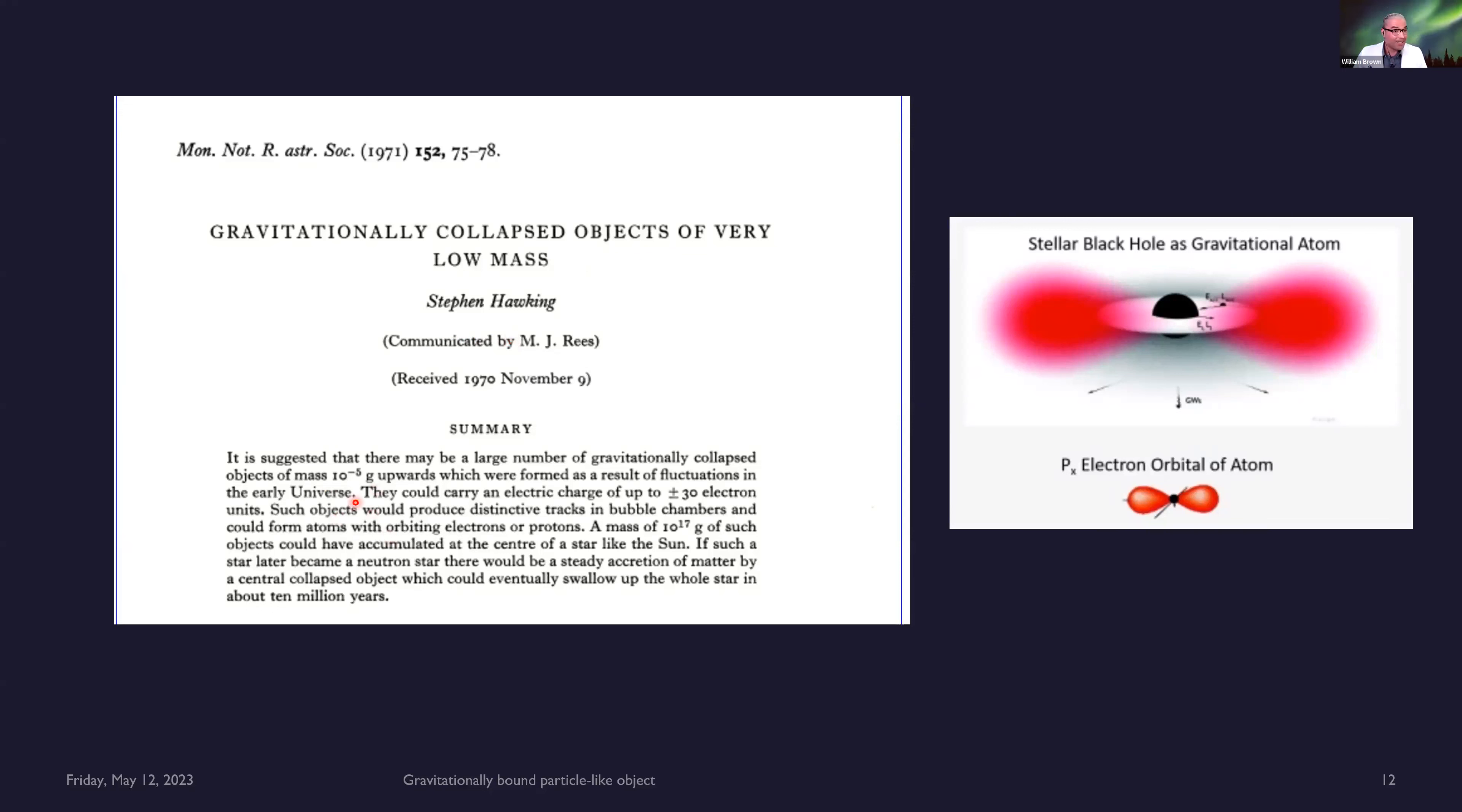He's talking about gravitationally collapsed objects, black holes, of a mass of the Planck mass to negative 5 grams upwards, which were formed as a result of fluctuations in the early universe, the Planck energy density.